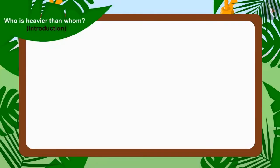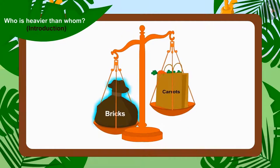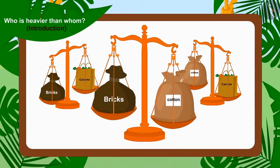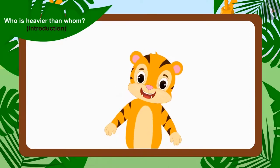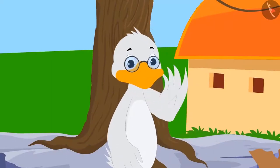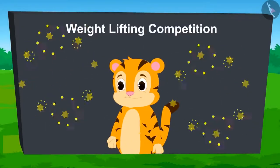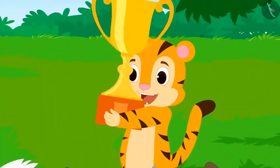Children, can you tell who will be the winner? Because the sack with Sheer Khan's bricks is heavier than Bunny's bag filled with carrots, and Bunny's bag of carrots is heavier than Bhola's sack of cotton, therefore Sheer Khan's bag filled with bricks is also heavier than Bhola's cotton sack. In this way, Sheer Khan is the winner of this competition. Uncle found the winner, and the audience is continuously clapping as Sheer Khan dances happily.